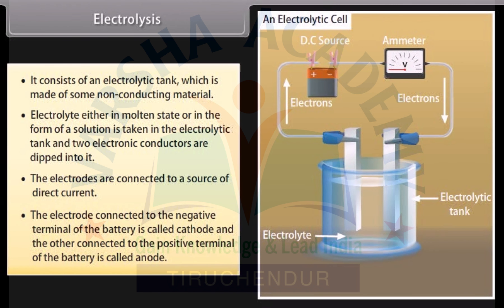The electrode connected to the negative terminal of the battery is called cathode, and the other connected to the positive terminal of the battery is called anode.